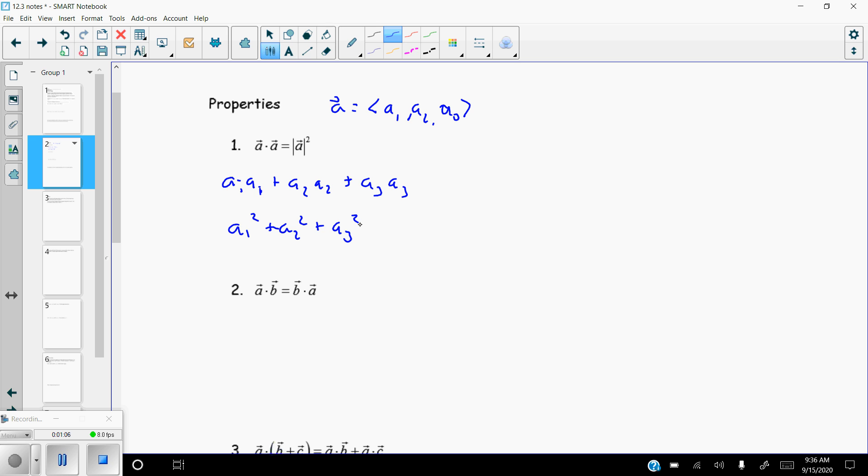Now if you think back, if you recall, the magnitude of a was defined to be each component squared added together and then you take the square root, so it's a1 squared plus a2 squared plus a3 squared. So then if I were to take that and square it,